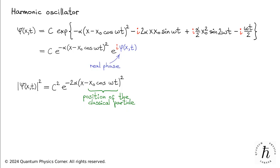This provides us with the following intuitive picture for the time evolution of the squared modulus of the wave function. It corresponds to a fixed-shaped Gaussian packet traveling alongside the classical particle.